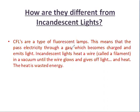In the case of incandescent lights, there is a wire called a filament. We heat this filament by applying a supply voltage until it glows and gives off light. The heat is wasted, resulting in less energy efficiency. In the case of CFL, the wastage of energy is very much less, making it an energy-efficient device.